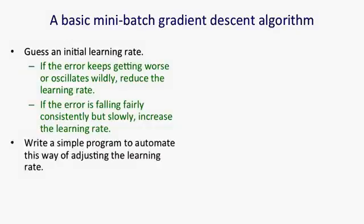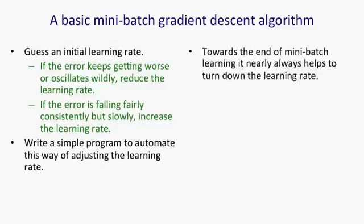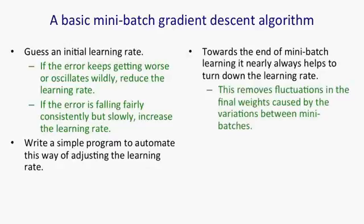Once you've got that working, you can then write a simple program to automate that way of adjusting the learning rate. One thing that nearly always helps is towards the end of learning with mini-batches, it helps to turn down the learning rate. That's because you're going to get fluctuations in the weights caused by the fluctuations in the gradients that come from the mini-batches.